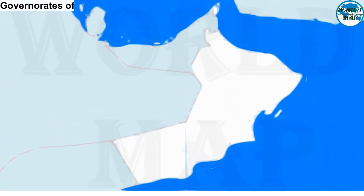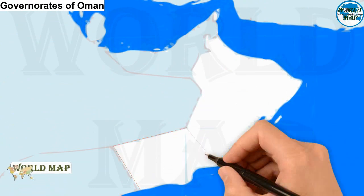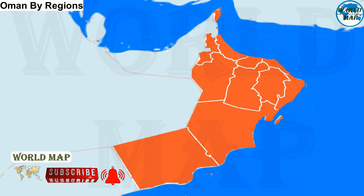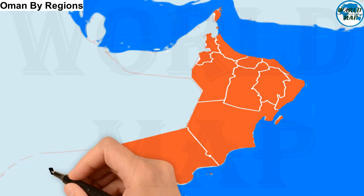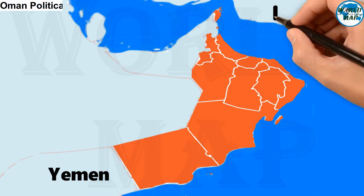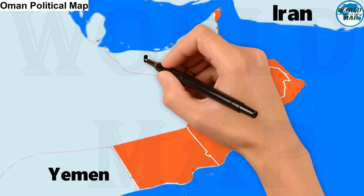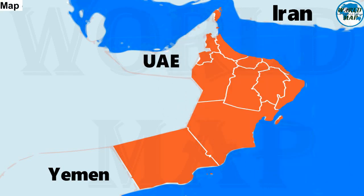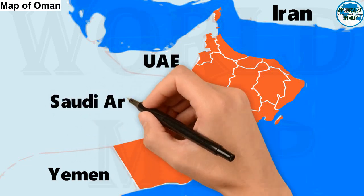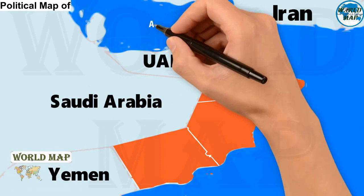The Eleven Governorates of Oman. The map shows Oman, a sultanate in the southeastern corner of the Arabian Peninsula. Oman borders Saudi Arabia, United Arab Emirates, and Yemen. It shares maritime borders with Iran and Pakistan. The country is bounded by the Arabian Sea and the Gulf of Oman. At the Musandam Peninsula it borders the Strait of Hormuz and the Persian Gulf.